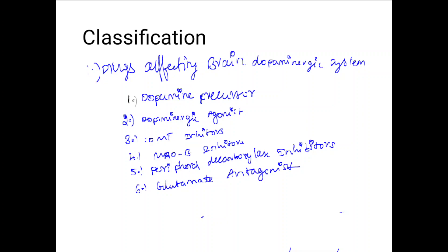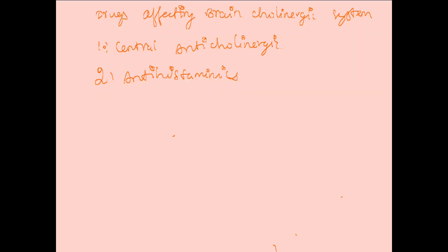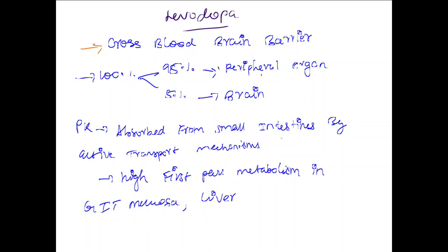Drugs affecting the brain cholinergic system include central anticholinergics and antihistaminics. For dopamine increasing effects, the drug is levodopa.